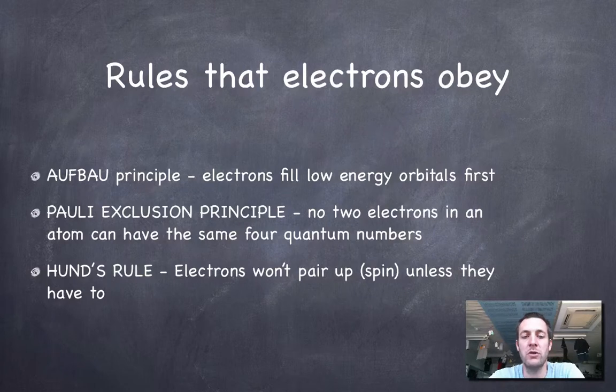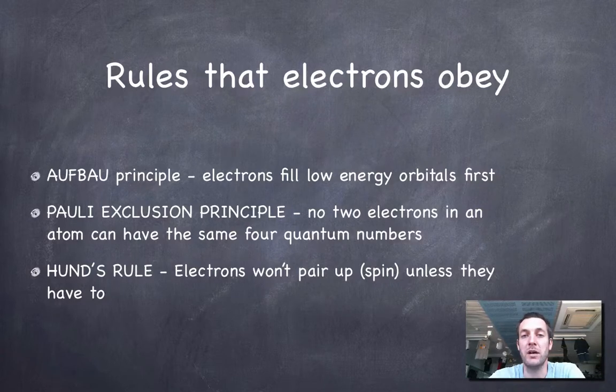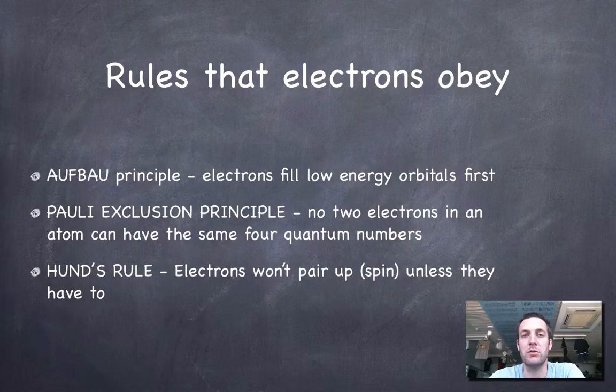And there's Hund's rule, which says that electrons won't pair up their spins in an orbital unless they absolutely have to. We'll see what we mean by that and put these rules into context by doing some examples using them.